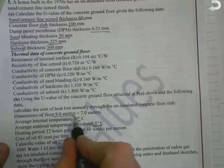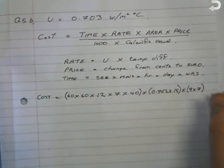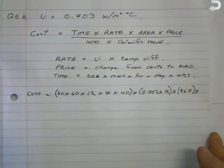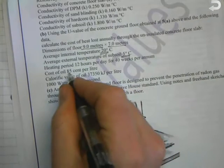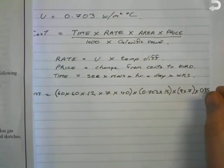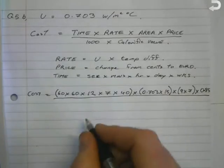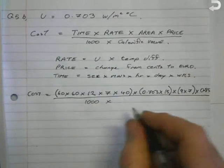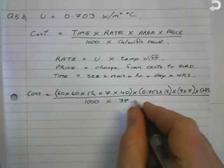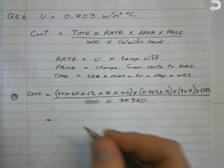Next it's multiplied by the area. In this question the area is 9 meters by 7 meters, so that's the dimension of the floor area. So 9 multiplied by 7, close brackets. Then we multiply this by the price. The price in this question for the oil was 85 cents, so to change that into euros it will be 0.85. Now all of this is over a line, so it's one thousand multiplied by the calorific value of oil which is standard 37,350.